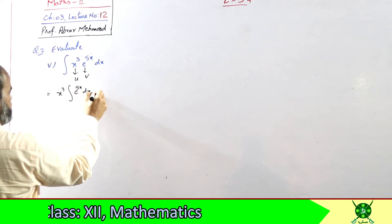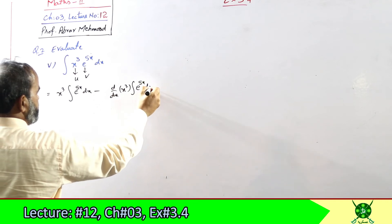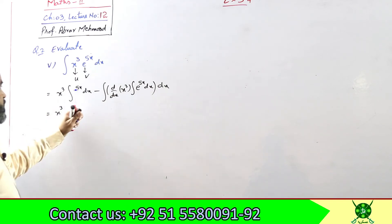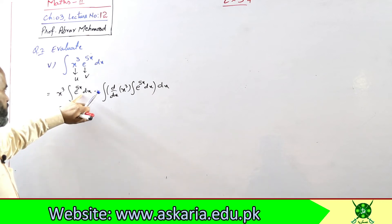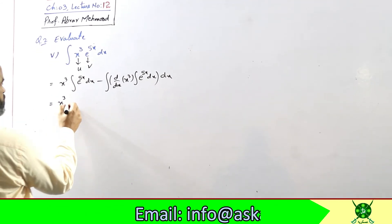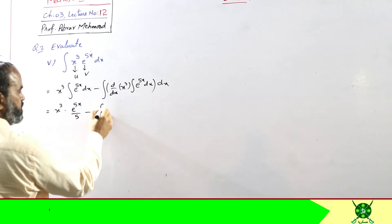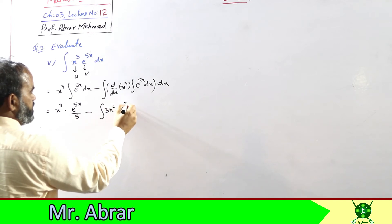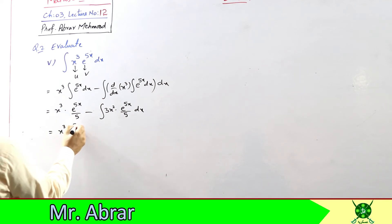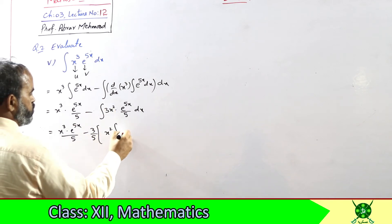u as it is, e^(5x) की integration minus derivative of x³, integration of e^(5x) dx। x·e^(5x) - power का derivative 5 है तो एक 5 multiply करते हैं और एक 5 से divide करते हैं। multiply होने की वजह से e as it is आजाएगा और जो divide हो रहा है वो नीचे लिखें। यह आजाएगा: 3x²·e^(5x)/5 dx।